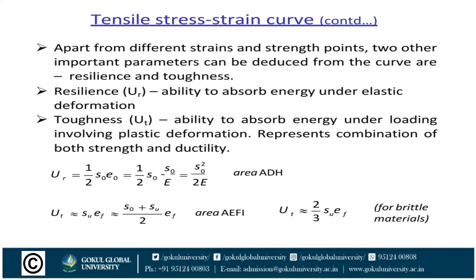Ductility is the property enabling a material to be drawn into a wire with the application of tensile forces. Brittleness is the property opposite to ductility. Malleability is a special case of ductility that permits a material to be rolled or hammered into a sheet. Toughness is the property of material to resist fracture due to high impact loads like hammer blows. Resilience is the property to absorb energy and resist shock and impact loads. Creep is defined as: when a part is subjected to a constant stress at high temperature for a long period of time, it undergoes slow and permanent deformation. Fatigue is defined as: when a material is subjected to repetitive stress below the yield point stress, that type of failure is known as fatigue.